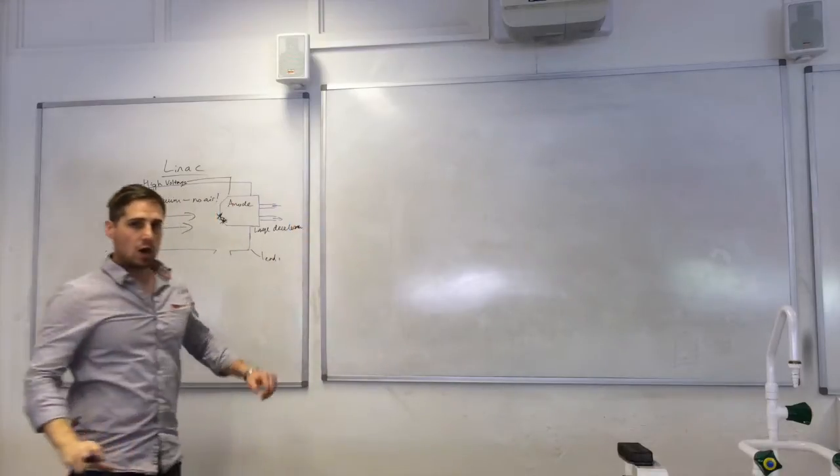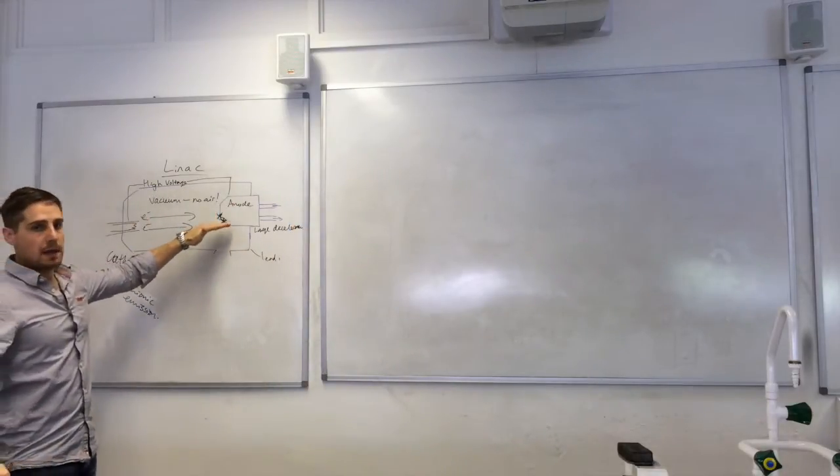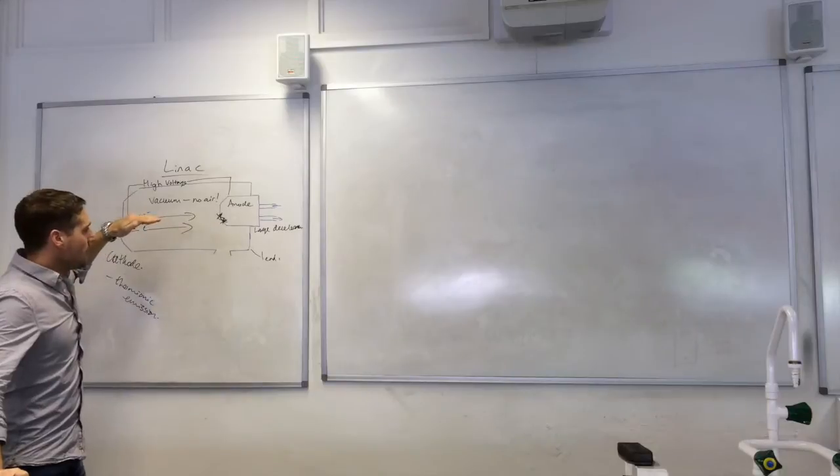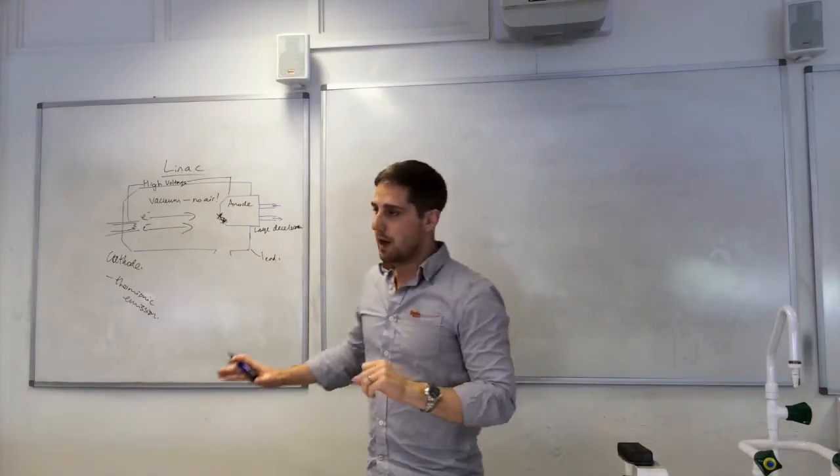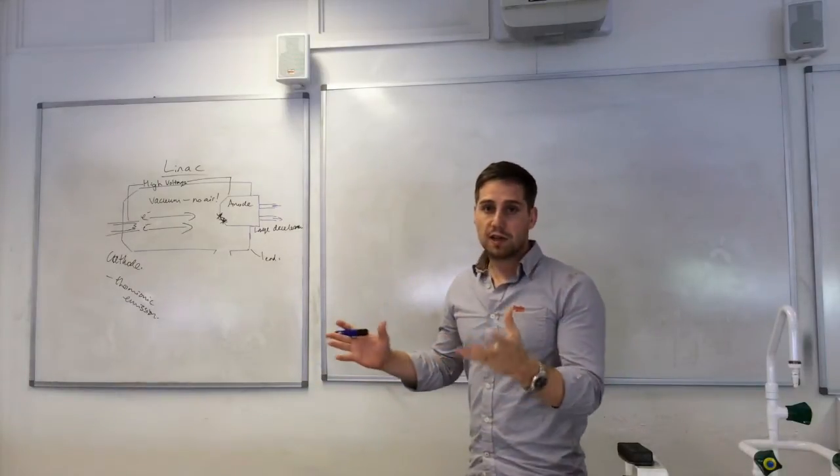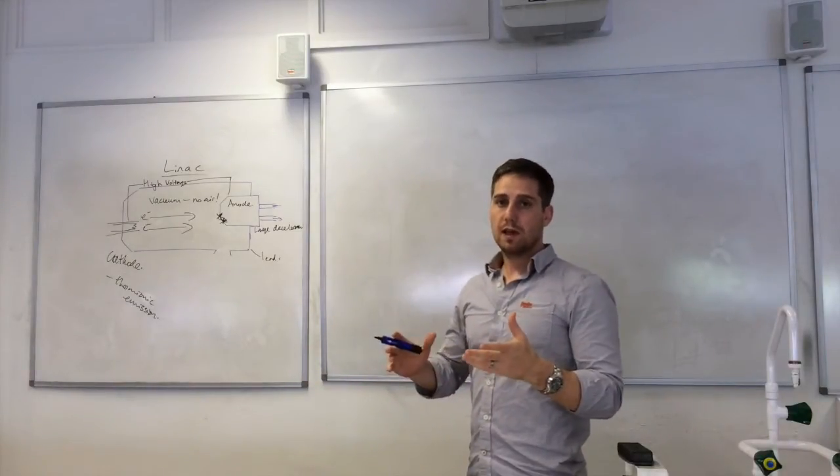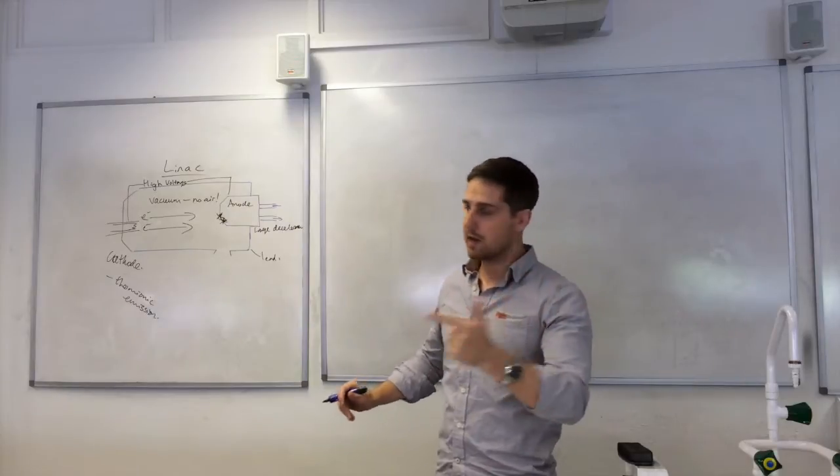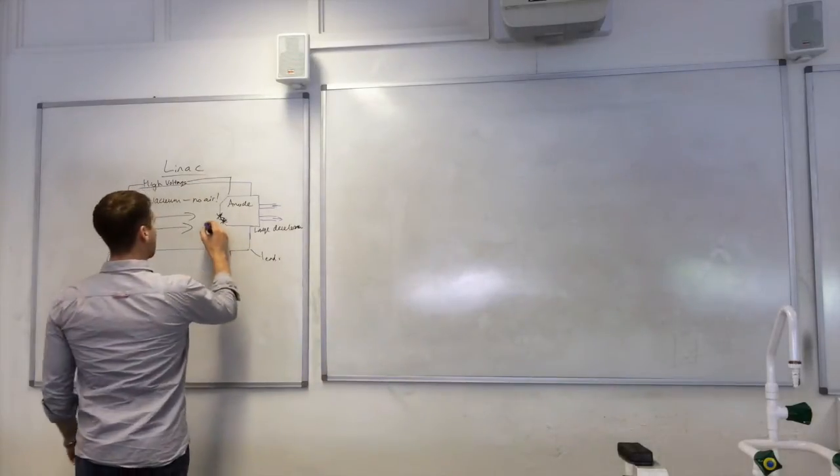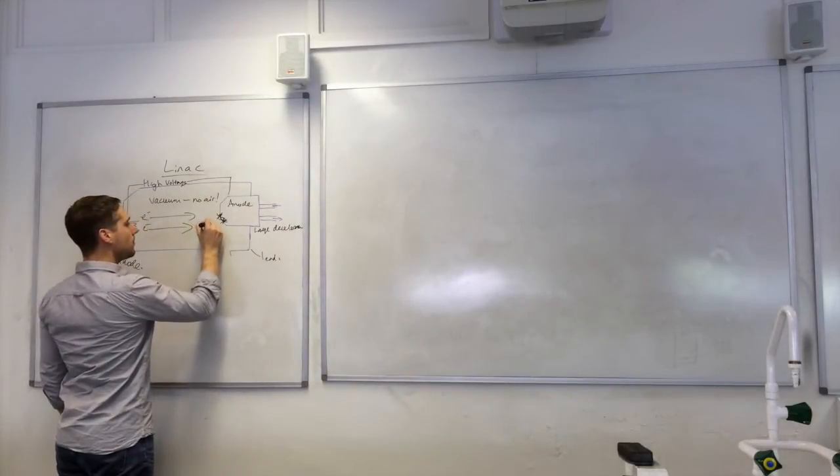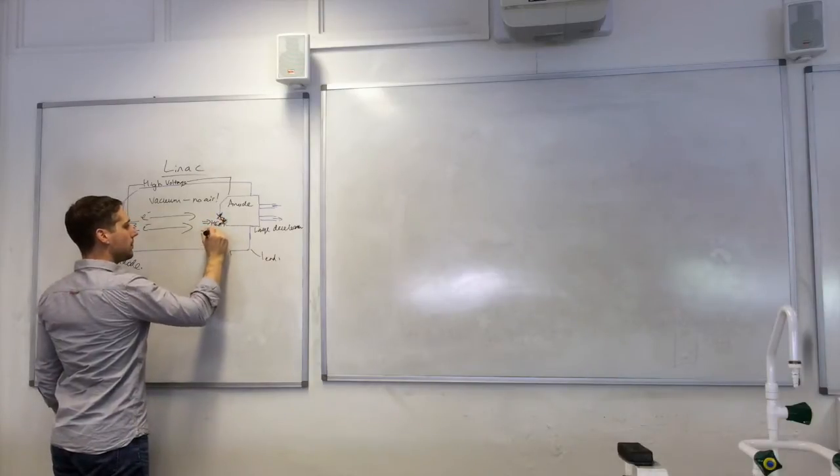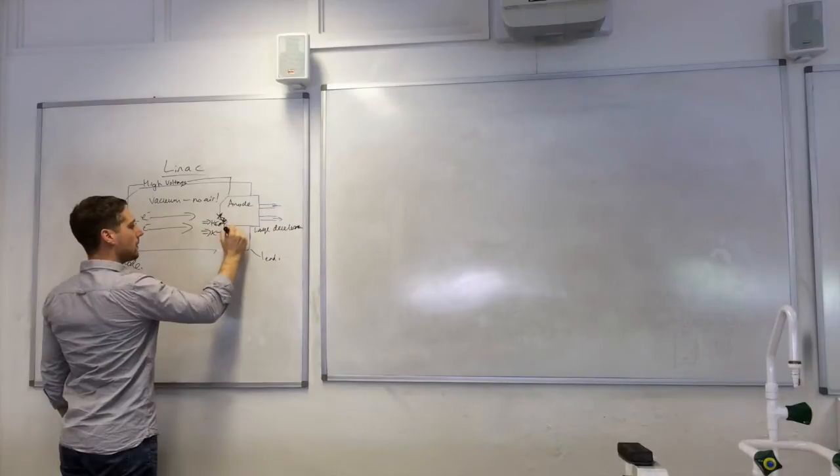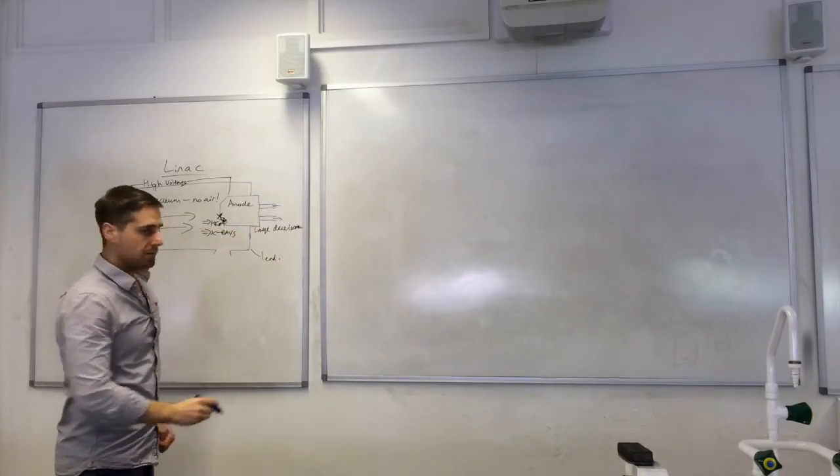So we've got a large deceleration going on here. And when electrons experience a large deceleration like this, their kinetic energy is converted into heat and X-rays. So we've got heat and X-rays being produced.